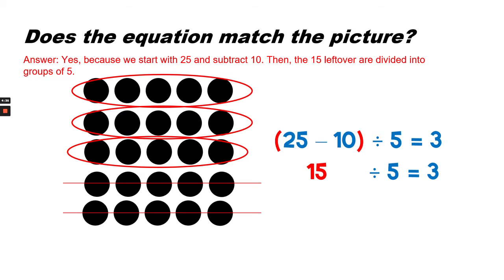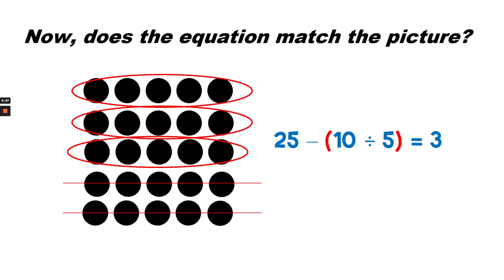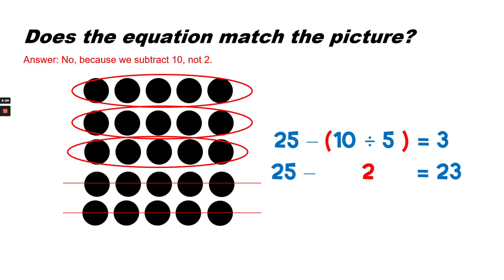Let's see another example. Now does the equation match the picture? Notice that the parentheses have changed position. Now it's 25 minus, in parentheses, 10 divided by 5 equals 3. Is that true? No, it is not, because we subtract 10, not 2.